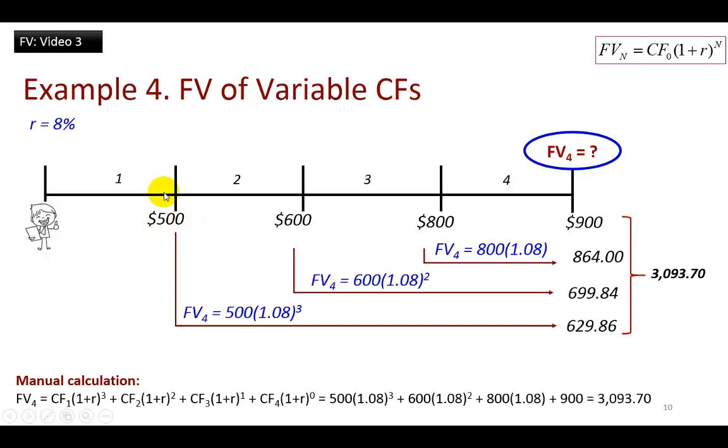In this first example here, we have different cash flows occurring at the end of each of four years. If we want to do manual computation using a future value formula, we have to find the future value of each of these cash flows separately and then add them all up, as I show here.